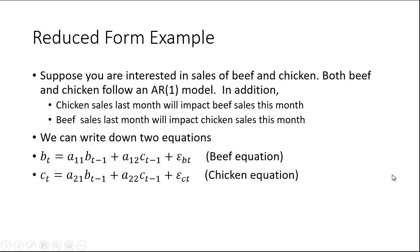Let's look at a reduced form model. Suppose you're interested in sales of beef and chicken, and you believe both follow an AR(1) model. In addition, you believe chicken sales last month will impact beef sales this month and beef sales last month will impact chicken sales this month. If beef sales were up last month, people may desire beef more and switch away from chicken, so chicken might be down this month. If chicken sales are down last month, people may be interested in beef now, so beef may be up this month.